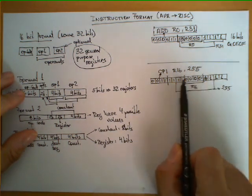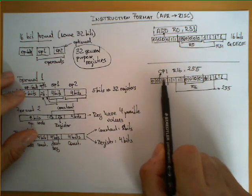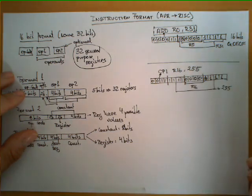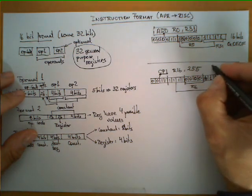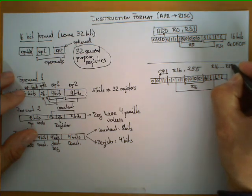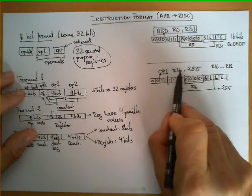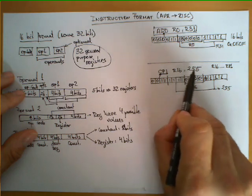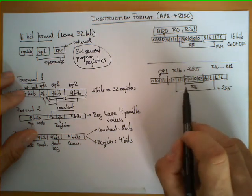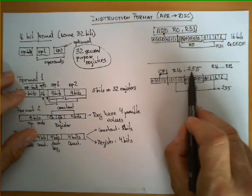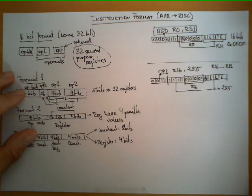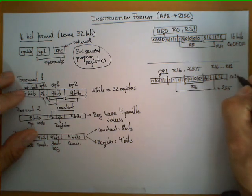This is an example of Format 2 — the constant is made out of four bits concatenated with four bits, four bits for the instruction, and the remaining four bits encode the register. This format imposes a restriction: for the instruction CPI, we're only allowed to use registers R16 to R31. If we write CPI R0 through R15, the translator will flag it as illegal because it cannot be encoded. The constant is limited to eight bits, so it can only be between 0 and 255. In memory, this instruction is represented as hexadecimal 0x3F0F.